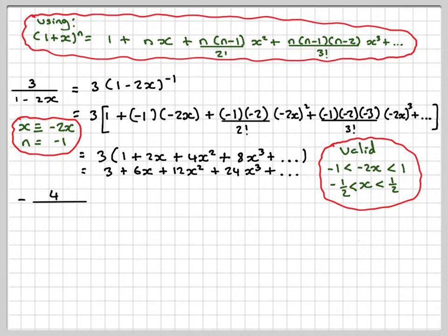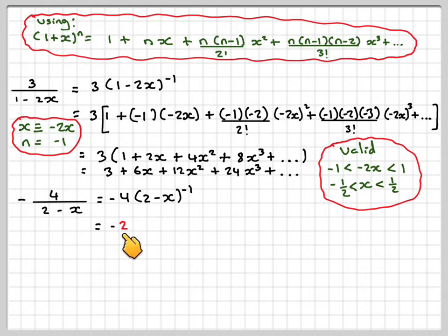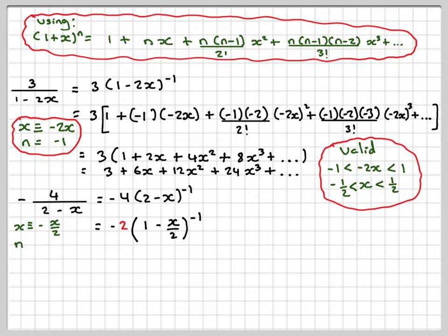Now expanding -4/(2 - x): we write this as -4(2 - x)^(-1). We must factor out a 2 to get a leading 1, giving -4 · (1/2) · (1 - x/2)^(-1) = -2(1 - x/2)^(-1). So in the binomial theorem, x is replaced by x/2 and n = -1.